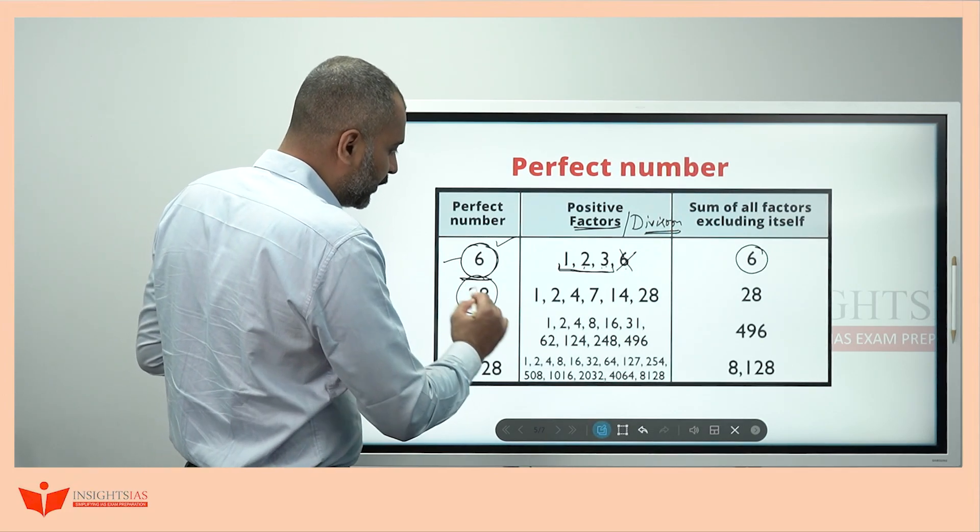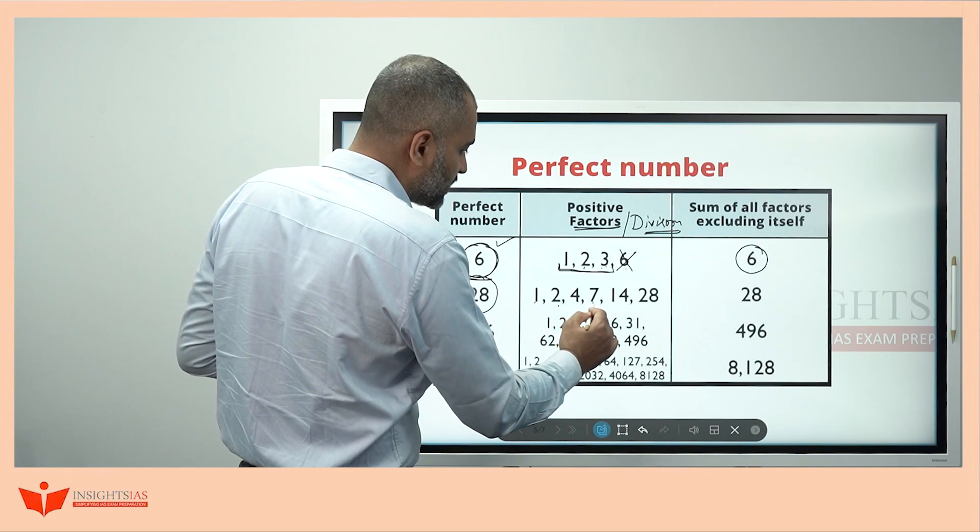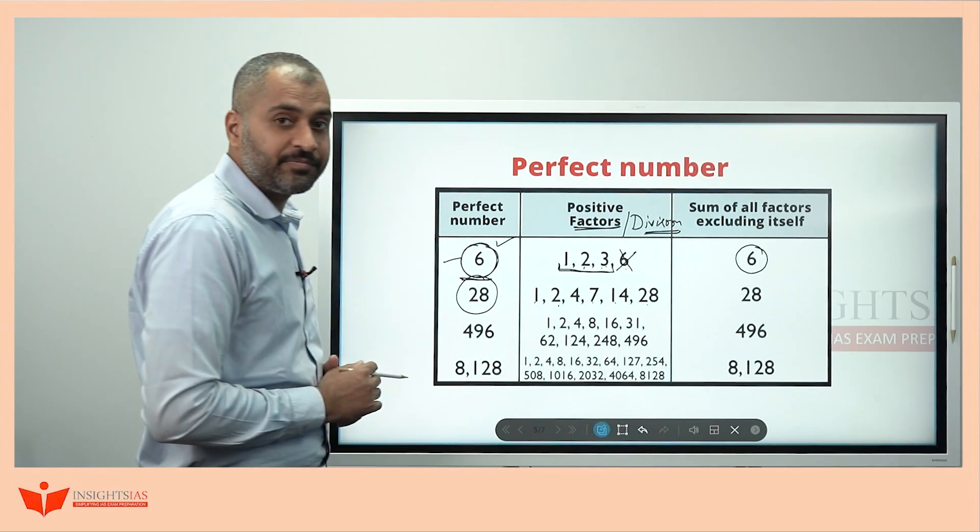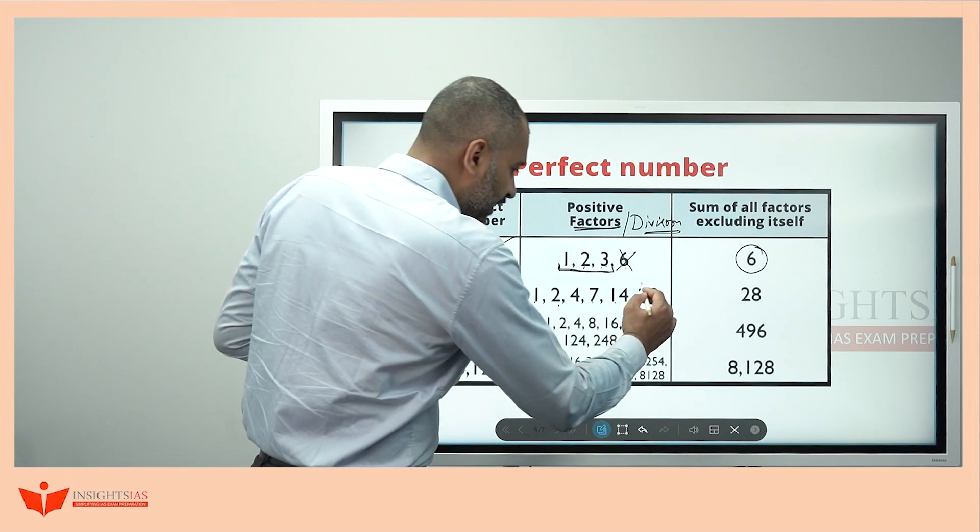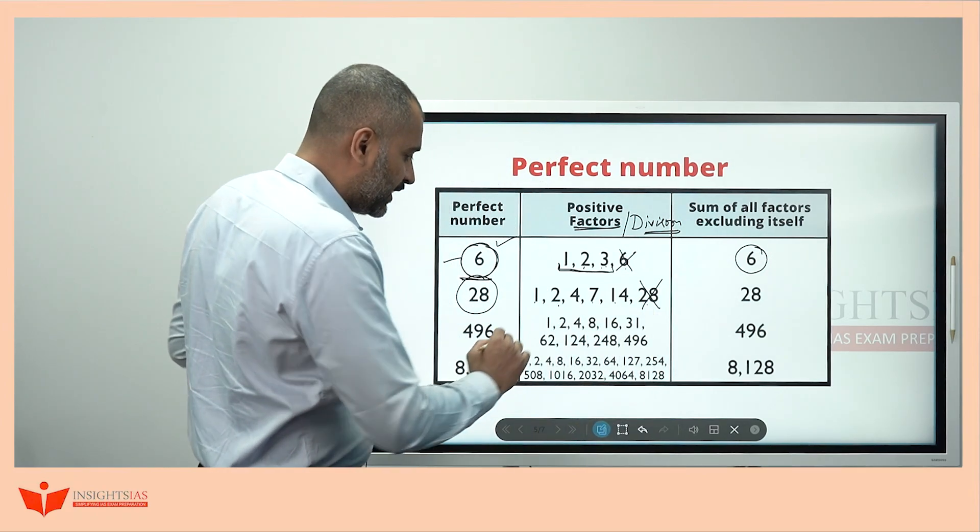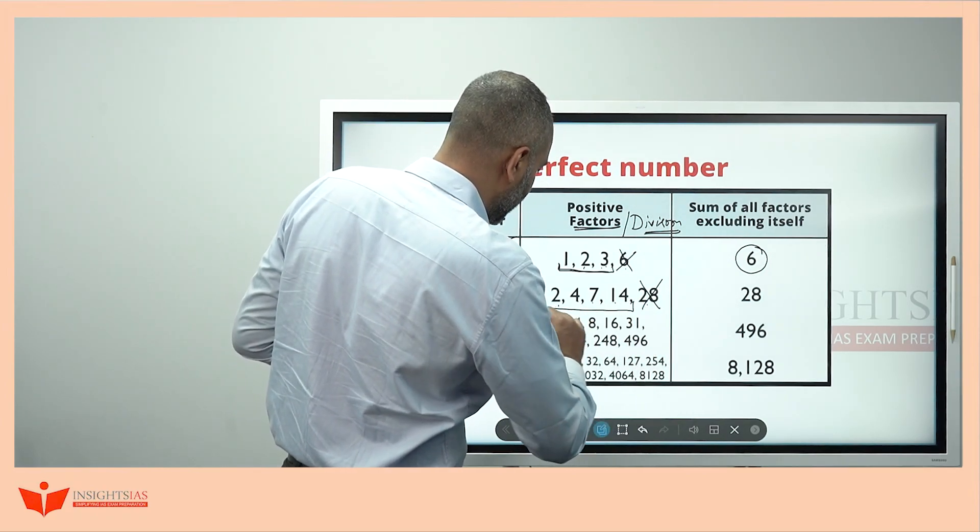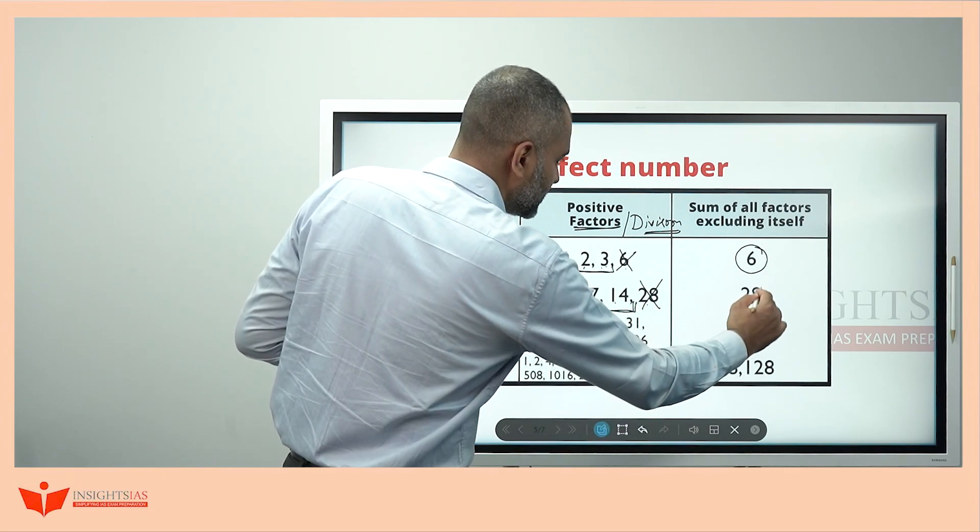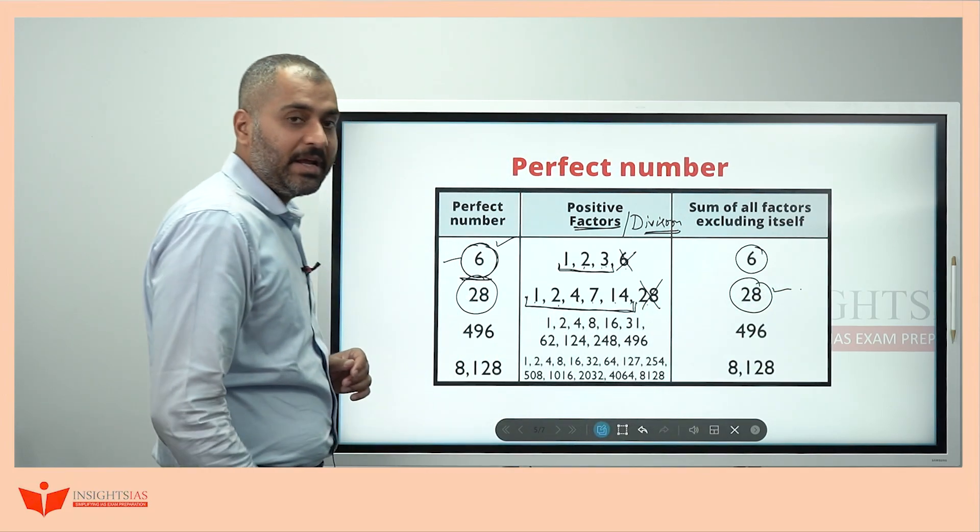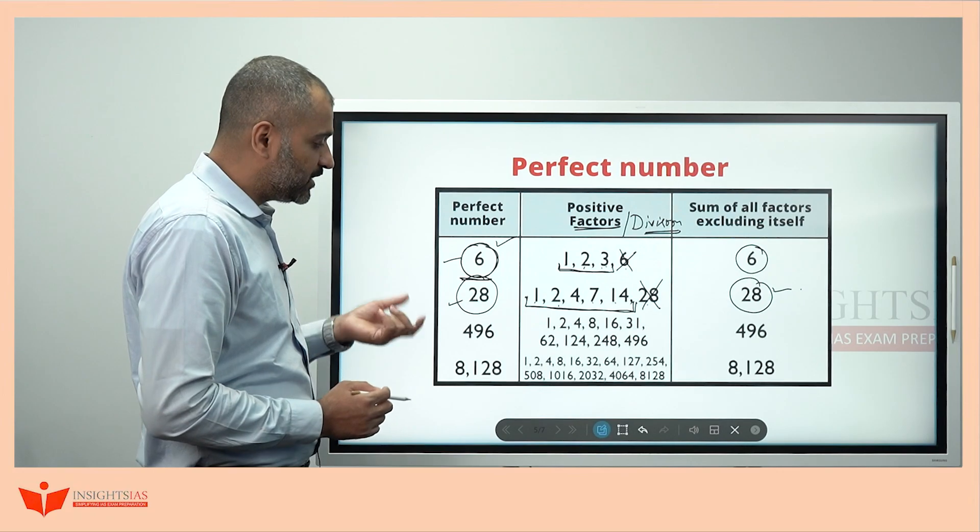Similarly now, 28. Factors of 28 are 1, 2, 4, 7, 14, 28. If I remove 28 here, the sum of the factors other than 28 itself, it is nothing but 28 itself. See 28. Then this is a perfect number.